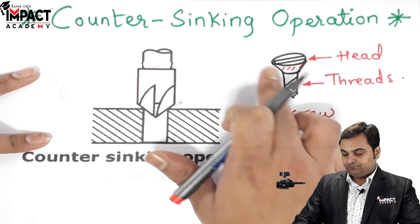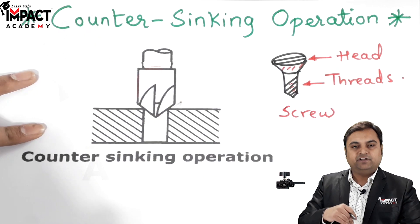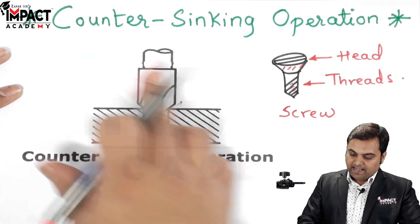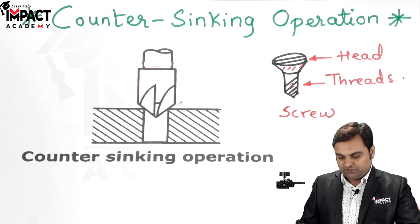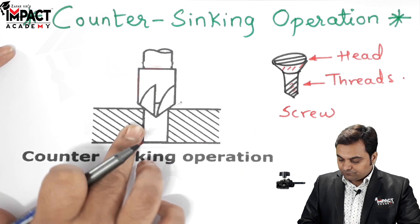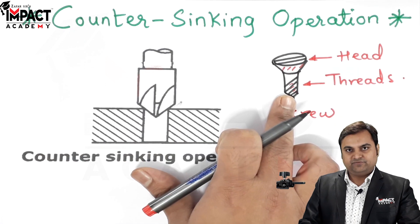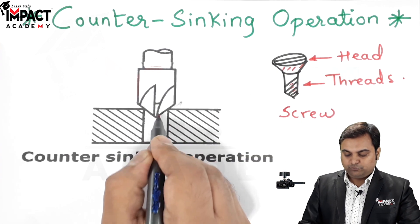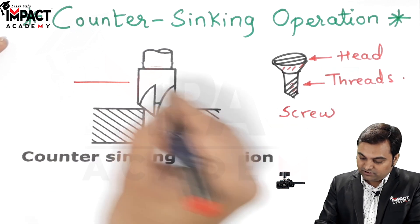If we want to produce an angular profile in the workpiece so that the screw gets fit inside that workpiece, for that we require the countersinking operation. This operation is also performed after the drilling operation — first the hole is drilled, corresponding to the diameter of the threads required. After that, we want the angular portion only up to a particular depth, for that we have a tool which is the countersinking tool.